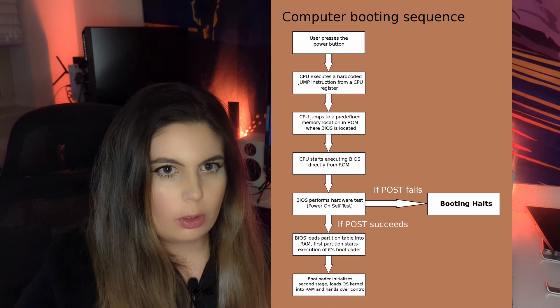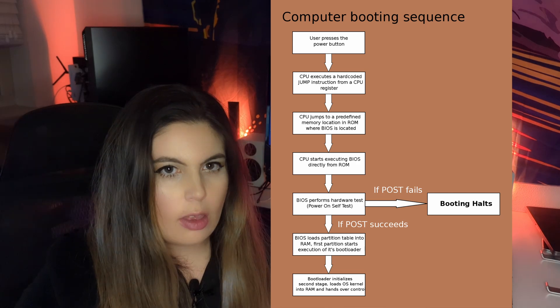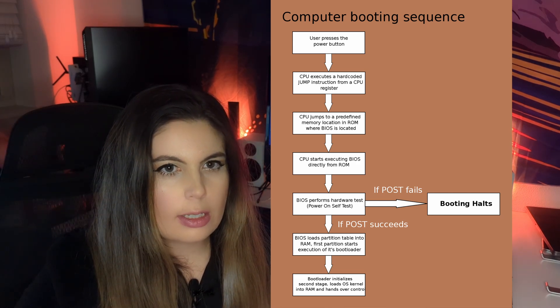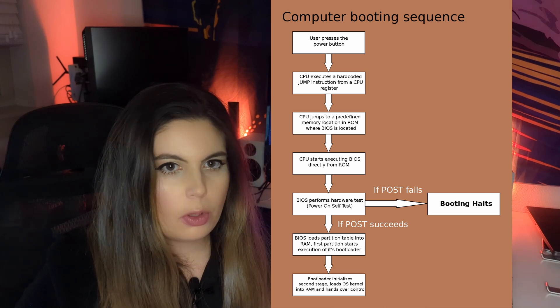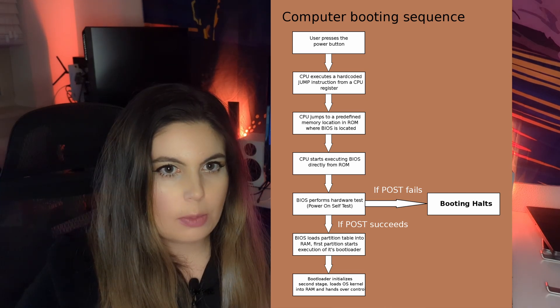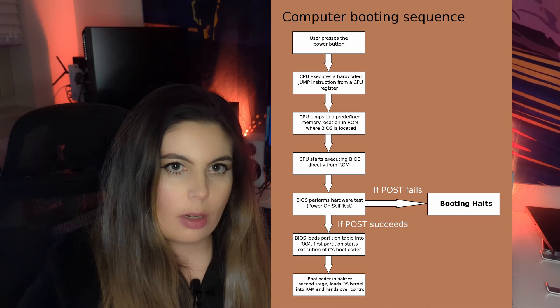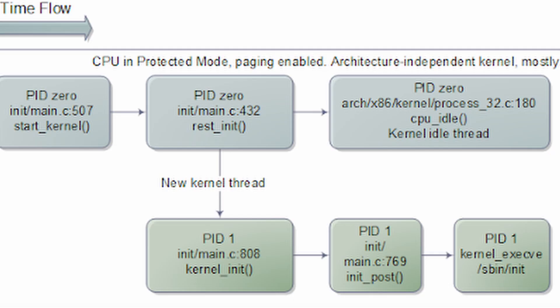Within that bootable device, it finds the first sector, and in the first sector of the master boot record there's typically a simple program called the bootloader. The bootloader is loaded into random access memory, or volatile memory, then properly interpreted. The bootloader will load a main kernel program, which will load all the main system components such as designated memory for the operating system, a file system, device drivers, a user space, and interface.